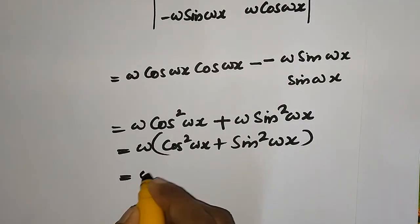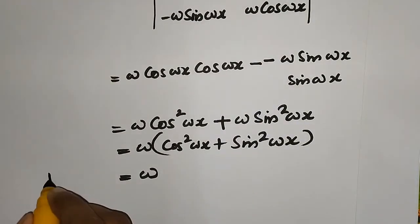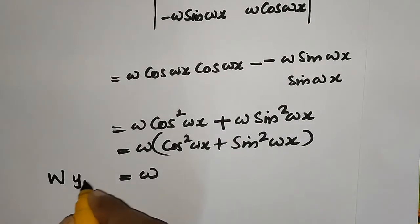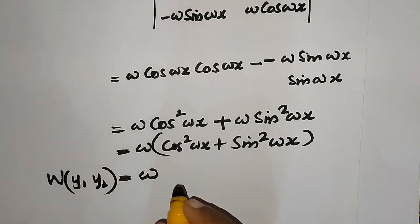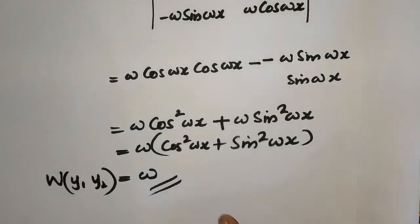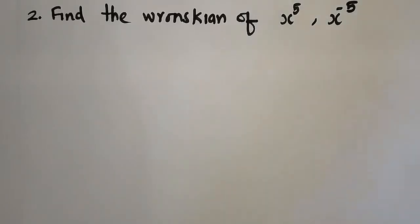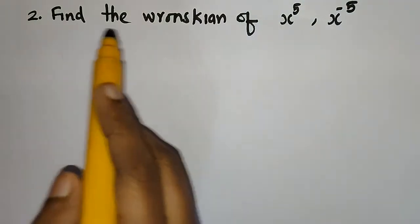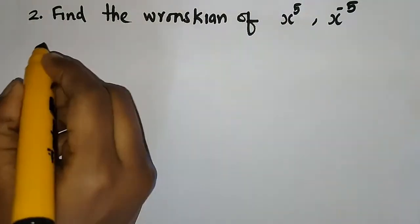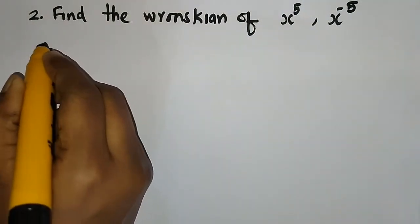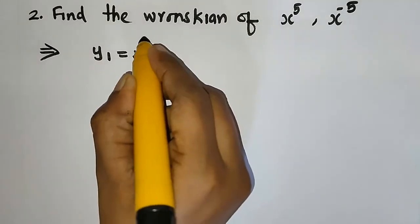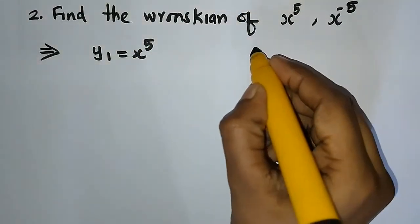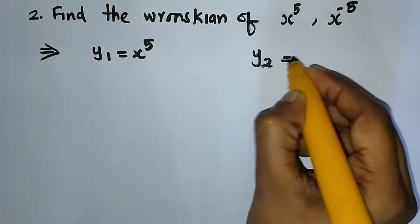So the answer is ω, since cos²(ωx) + sin²(ωx) = 1. Now we will do the next question. Find the Wronskian of x⁵ and x⁻⁵. So y₁ = x⁵ and y₂ = x⁻⁵.